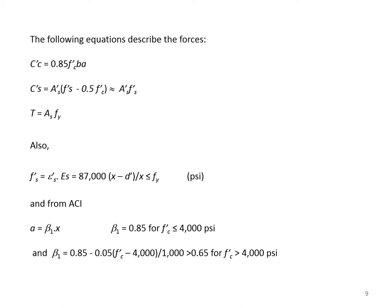From ACI, a equals beta_1 × x, where beta_1 equals 0.85 for f'_c of 4,000 psi or smaller. For every 1,000 psi above 4,000 psi, beta_1 is reduced by 0.05. However, the smallest possible value for beta_1 is 0.65.